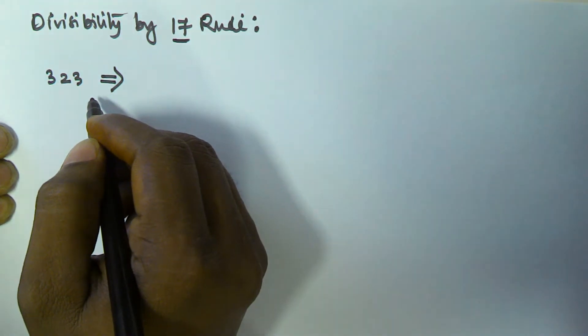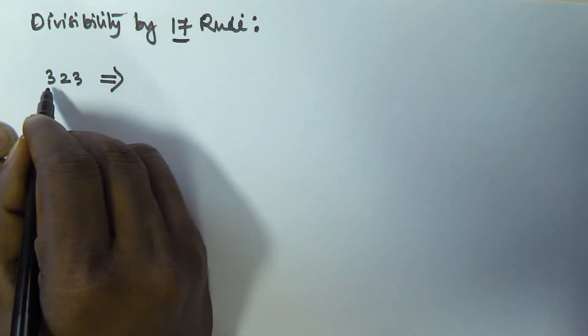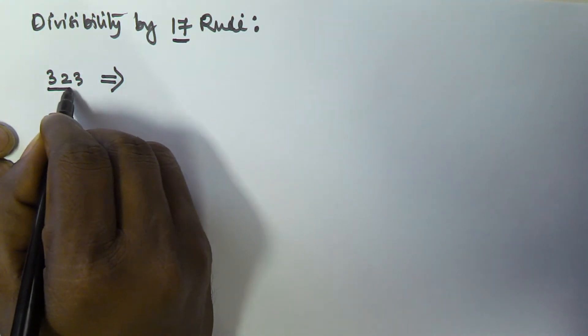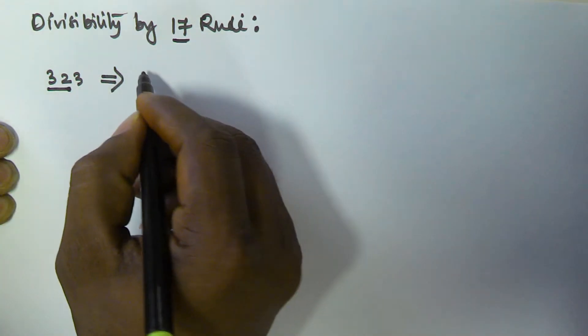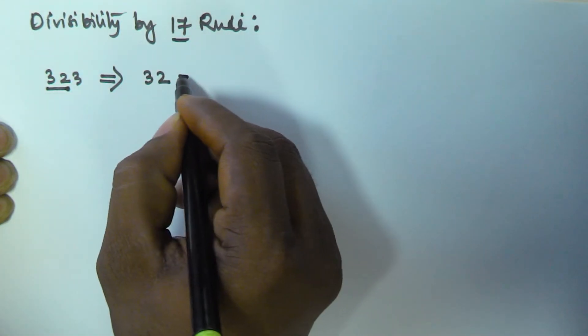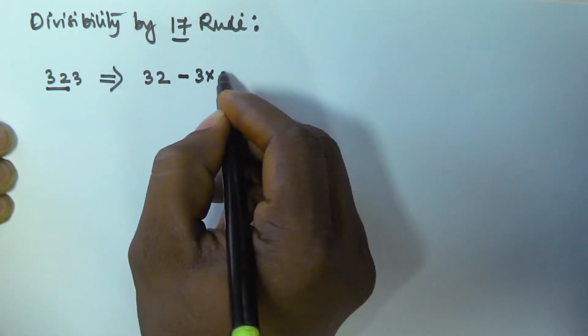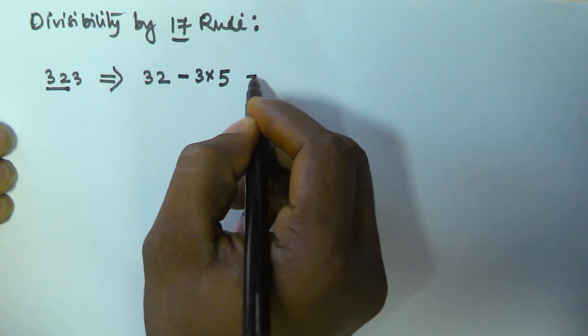You take all the digits except the unit digit, that is 32, and subtract the unit digit multiplied by 5. So 32 minus 3 times 5 equals 17.